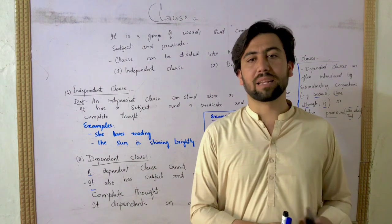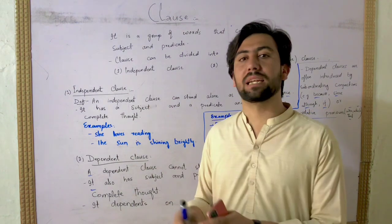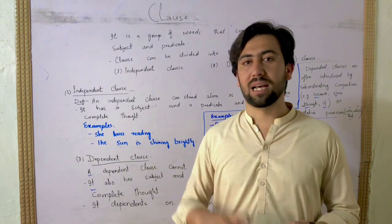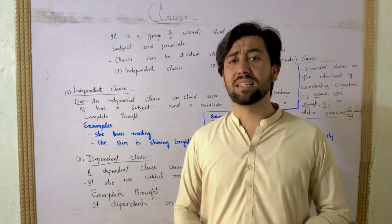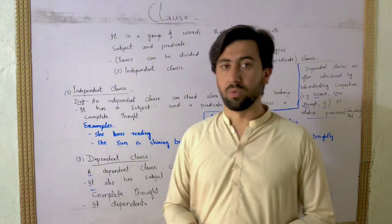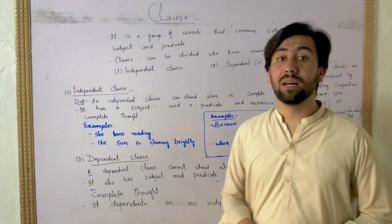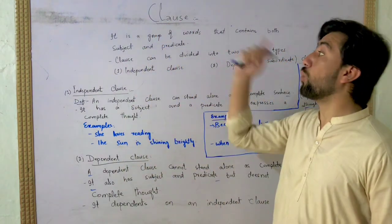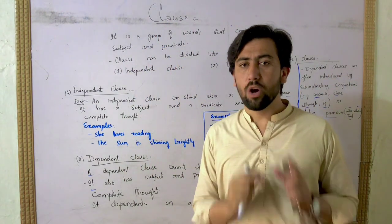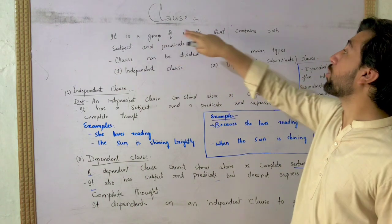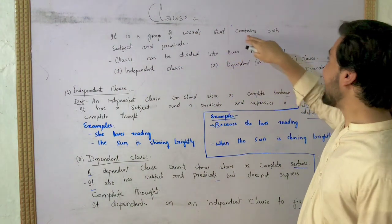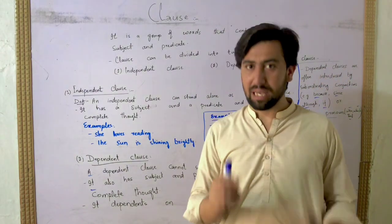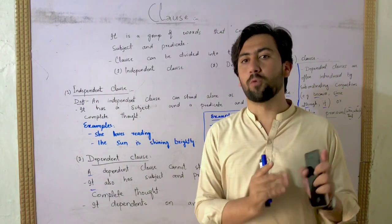The second part covers the dependent clause — like adjective clause, adverb clause, and noun clause. The first part is the independent clause. A clause is a group of words that contains both a subject and a predicate. The clause is this group of words.